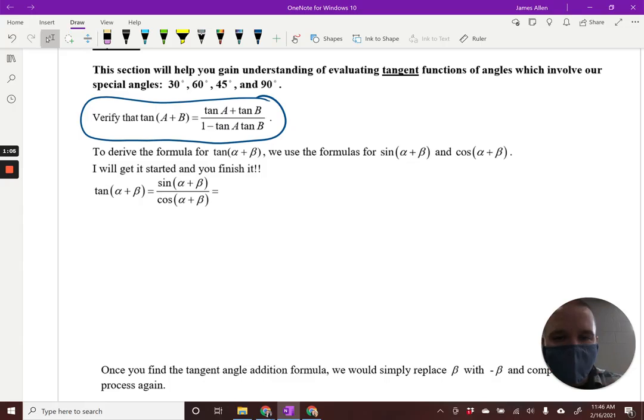So we're going to use our sum for sine and cosine formulas to derive this. We know that tangent is equal to sine over cosine, so we can then infer, conclude that sine of alpha plus beta over cosine of alpha plus beta would also be equal to tangent of alpha plus beta. So let's go ahead and expand our sine and cosine. I'm going to pause the video to do that to save some time.